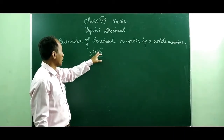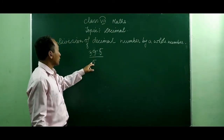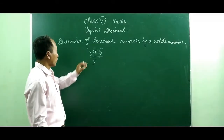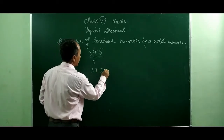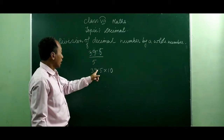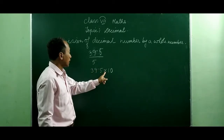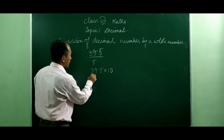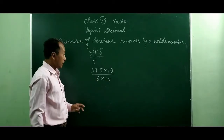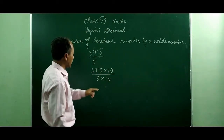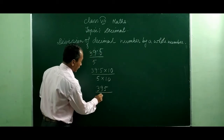Here you see 39.5, this is a decimal number, and we have a whole number 5 on the bottom. So 5 is going to divide 39.5. For this, what we are going to do is first remove the decimal by multiplying with 10. Why multiplying with 10? Count the decimal places — there is 1 digit after the decimal, so we use 10. So 39.5 multiplied by 10 gives 395. Since we are multiplying with 10 on the numerator, the denominator also should be multiplied with 10, making it 5 into 10.